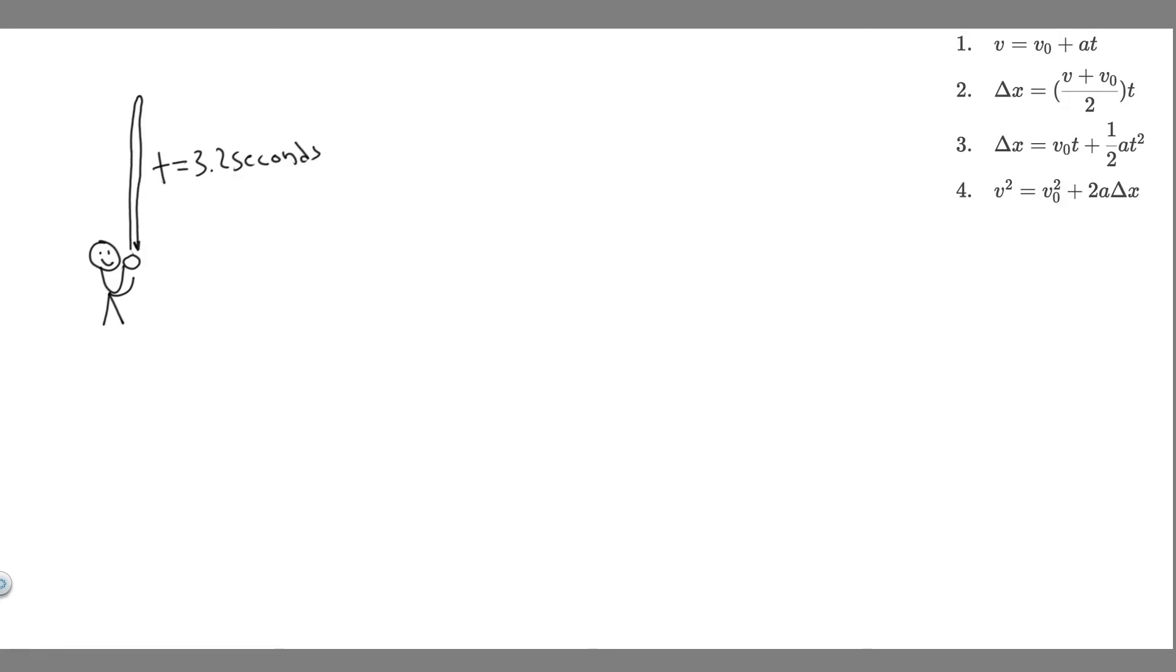In this problem, we're told, for a flourish at the end of her act, a juggler tosses a single ball high into the air. She catches the ball 3.2 seconds later at the same height from which it was thrown. What was the initial speed of the ball?